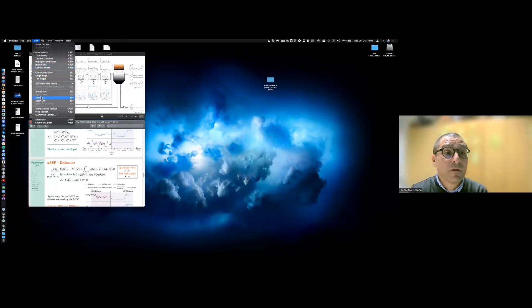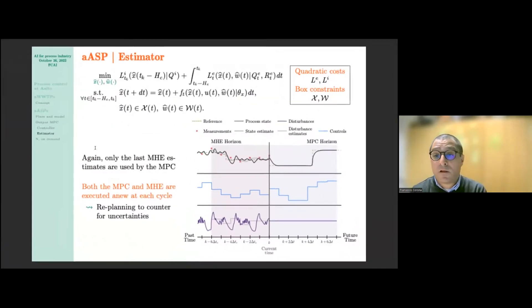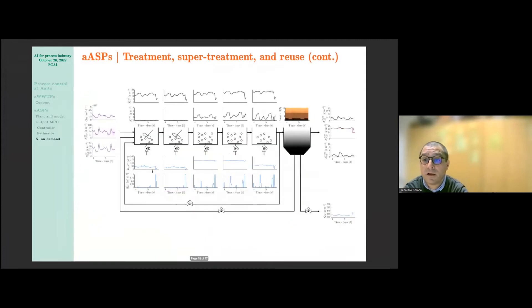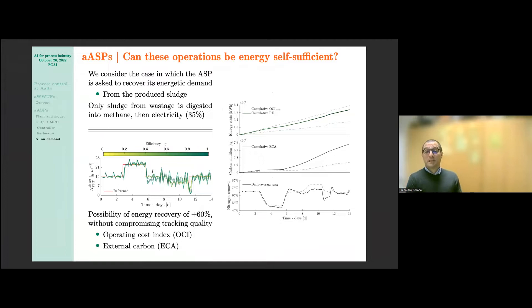A couple of final comments. We have started looking into the possibility to do the same kind of operations under a constrained sustainability type of operation. The idea is whether we would be able to actually recover the energetic demand to run the plant under these conditions directly from the wastage that is digested in the methane. We have started investigating these quantities. There is basically the possibility, according to our results, to at most recover 60% without compromising the tracking quality.